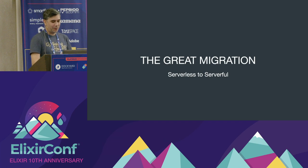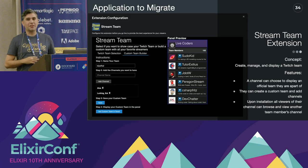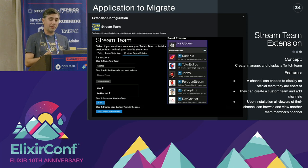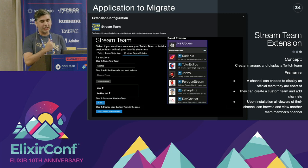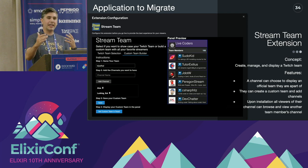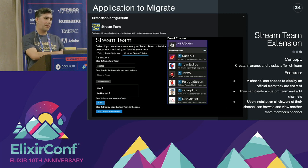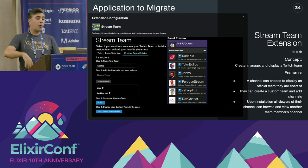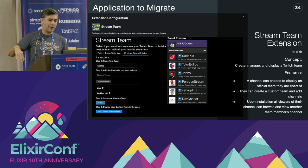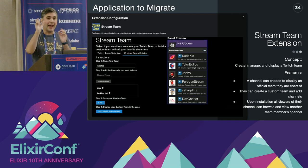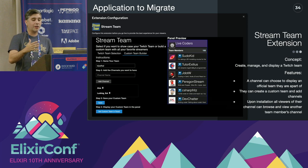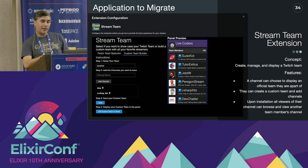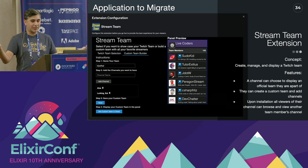So, the great migration. Let me introduce the application I was going to first start migrating. The first application was a stream team extension — it allows a channel to create, manage, and display their Twitch team. They can choose a Twitch team or create a custom team, adding channels. In the panel, it displays them so viewers can see all the people on the team and click to visit their teammates' channels.